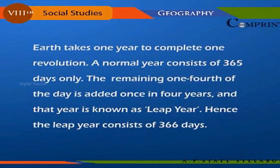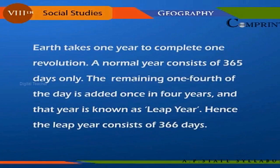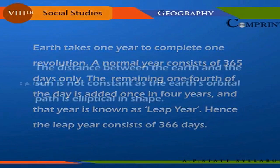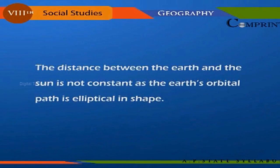Earth takes one year to complete one revolution. A normal year consists of 365 days; the remaining one-fourth of a day is added once in four years, and that year is known as a leap year, which consists of 366 days. The distance between the earth and the sun is not constant, as the earth's orbital path is elliptical in shape.